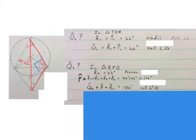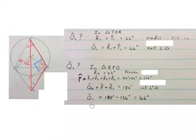Then we may write Q2 plus P plus R2 is 180, the interior angles of a triangle. Then you can just write Q2 equals 46 degrees. It's 180 minus the other two angles. You can say sum of interior angles of a triangle or just interior angles of a triangle, all depends what you were taught.